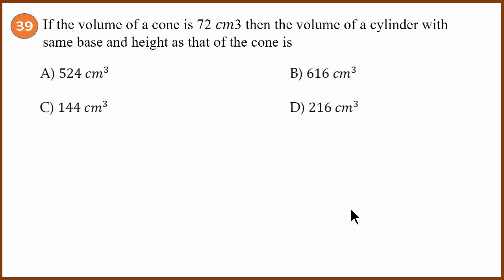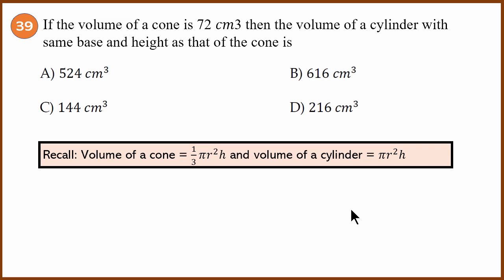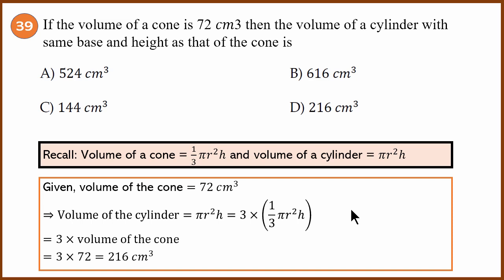Question 39: the volume of a cone is 72 cm³. The volume of a cylinder with the same base and height as the cone is required. Volume of cone = (1/3)πr²h and volume of cylinder = πr²h. The cylinder volume can be written as 3 × (1/3)πr²h, which is 3 times the volume of the cone. So it equals 3 × 72 = 216 cm³. In general, the cylinder volume is always 3 times the cone volume for the same base and height. The answer is D.